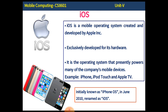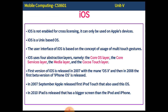iOS was initially called iPhone OS and in June 2010 it was renamed as iOS. It is a mobile operating system specifically designed for Apple hardware, later released for iPhone, iPod, Touch screen, and Apple TV. It is not enabled for cross-licensing and is specifically designed for Apple devices. It is based on Unix and uses a multi-touch screen gesture interface. It has four layers: Core OS layer, Core Service layer, Media layer, and Cocoa Touch layer. The first version was released in 2007, and later released for iPad with various versions following.